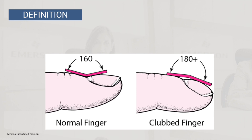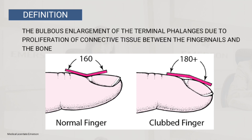So the definition of finger clubbing: it is the bulbous enlargement of the terminal phalanges due to proliferation of connective tissue between the fingernails and the bone. As you can see, this is a clubbed finger — it is a change to more than 180 degrees in between the nail and the nail bed.